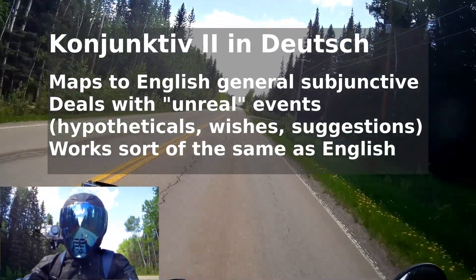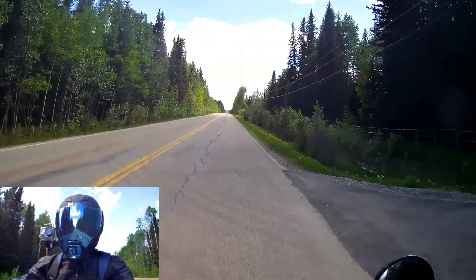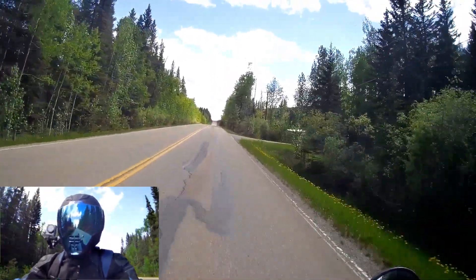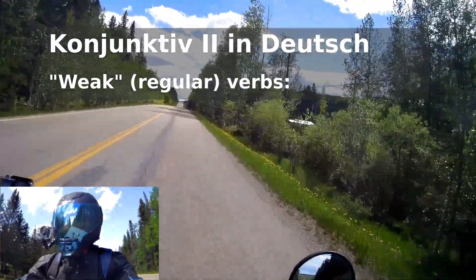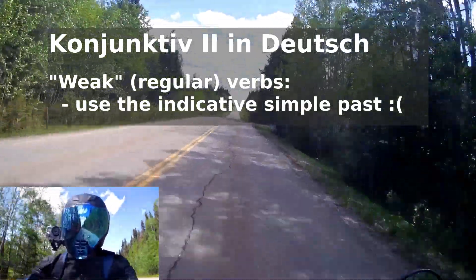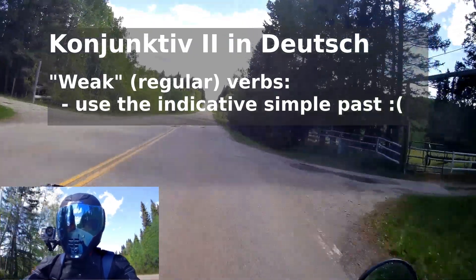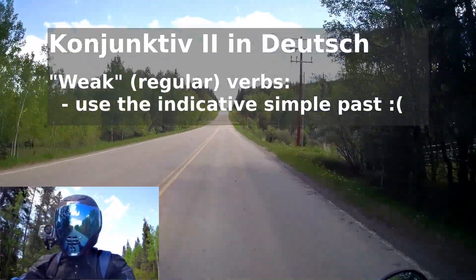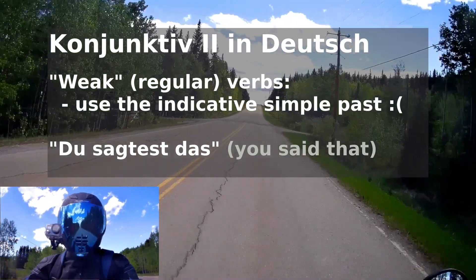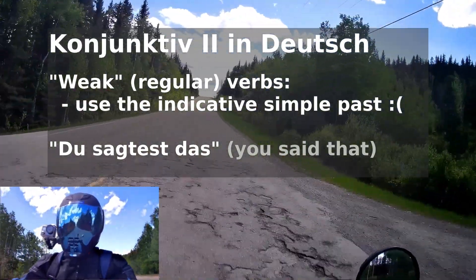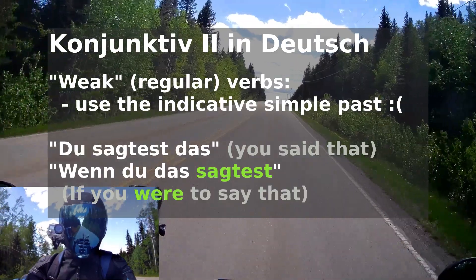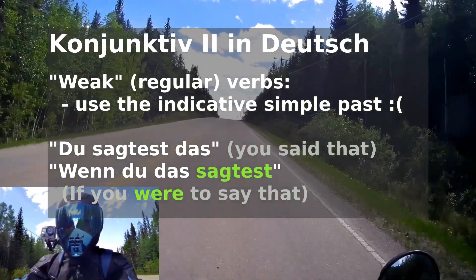The verb forms are a little bit more complex because German verbs have more possible endings than English ones, depending on who you're talking to. For the so-called weak verbs — the regular verbs in German — we take the simple past tense indicative form of the verb and use it as-is. For example, "du sagtest das" is simple indicative past tense meaning "you said that." The Konjunktiv 2 form is "wenn du das sagtest" — "if you were to say that."